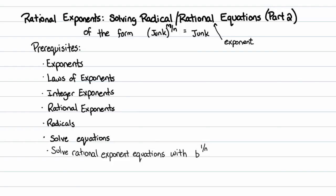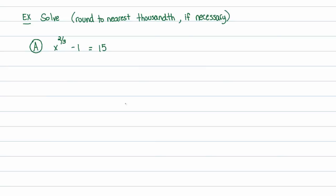This time around we're going to solve equations of the form 'junk to the m over n equals junk' — in other words, we change the exponent from 1 over n to m over n. There are several prerequisites: you need to know everything about exponents, integer exponents including negative and zero exponents, fractional or rational exponents, how to simplify radicals, how to solve equations, and how to solve rational exponent equations with base to the 1 over nth power. That's quite a few prerequisites, but that's how it goes when you get deeper into a topic.